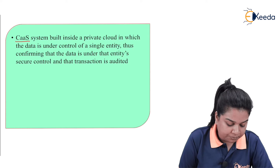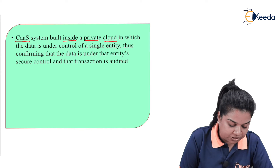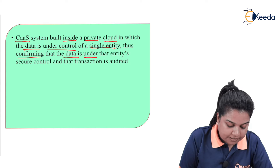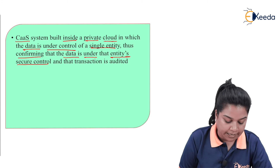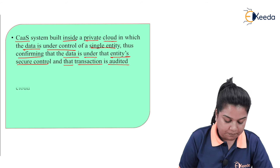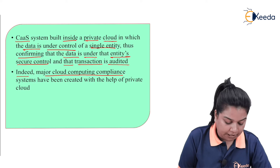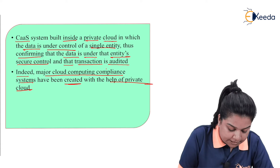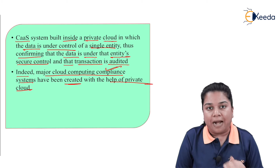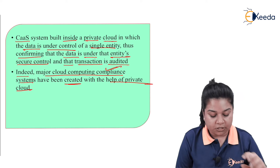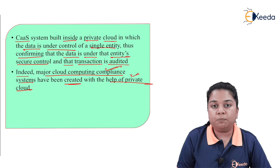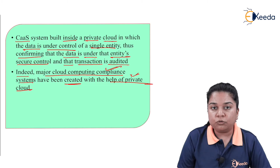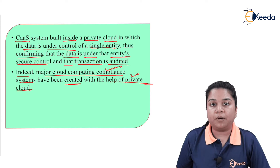A compliance as a service system built inside a private cloud keeps data under the control of a single entity, confirming that the data is under the entity's secure control and that transactions are audited. Major cloud computing compliance systems have been created with the help of private cloud, because in private cloud you can make certain rules that enterprises will follow. Those rules or the compliance system are being made using private cloud.